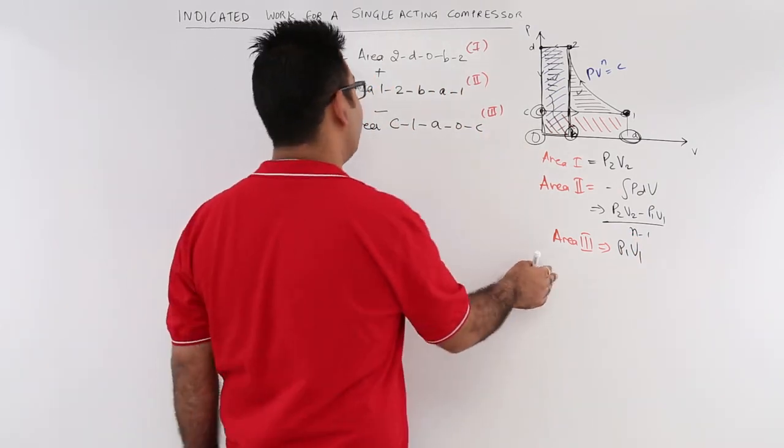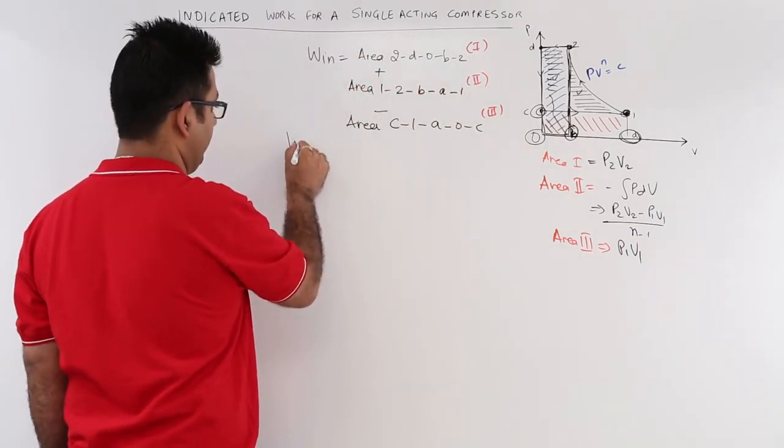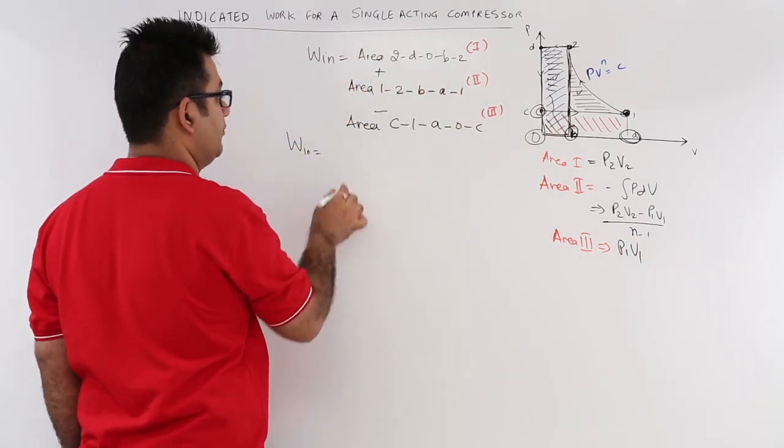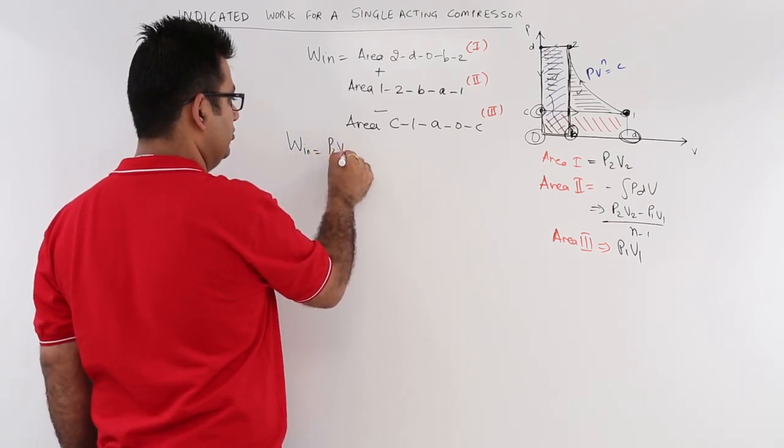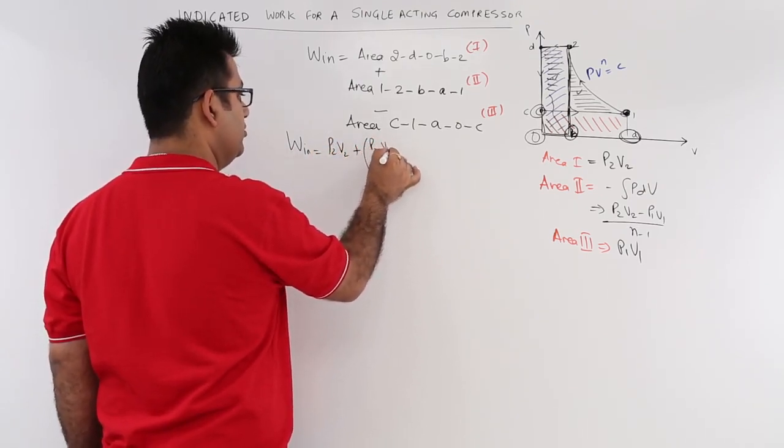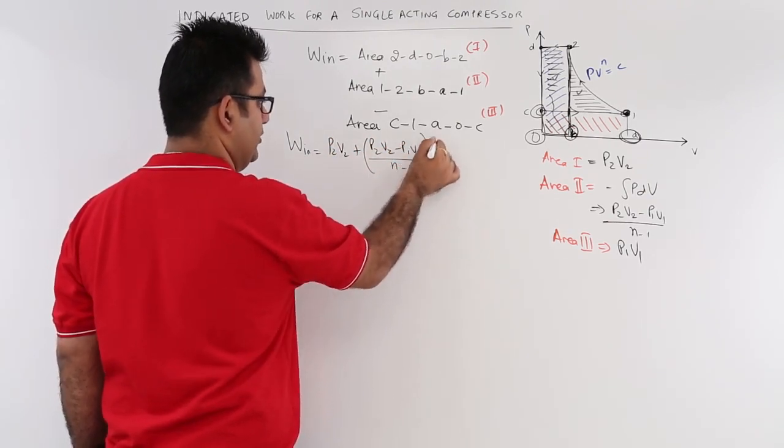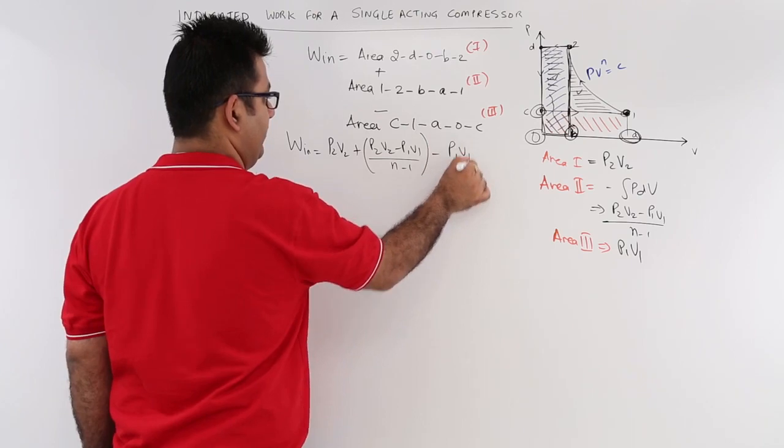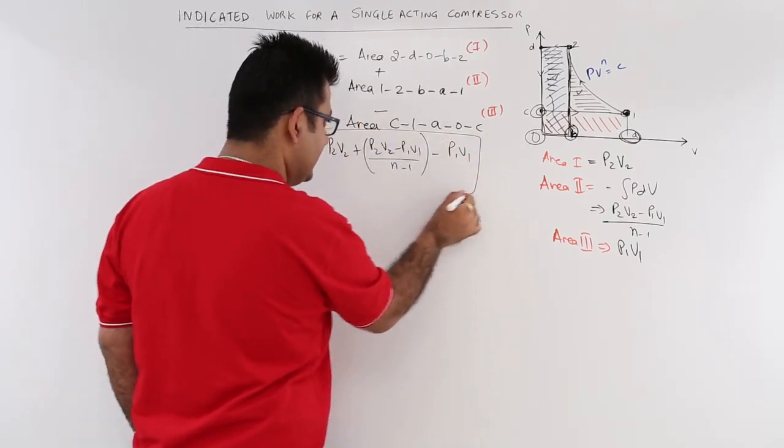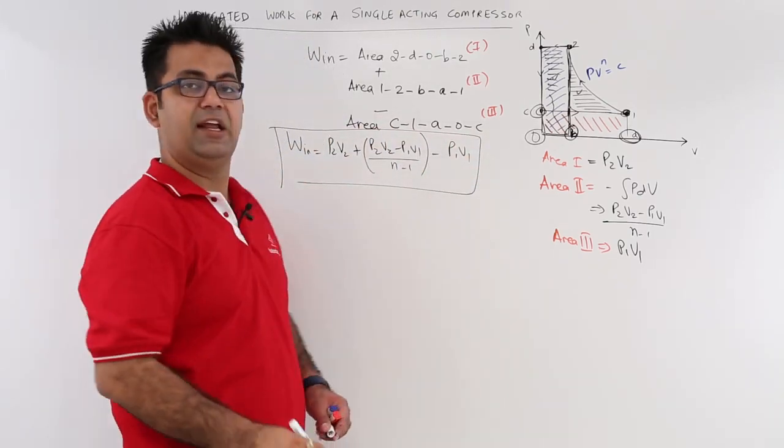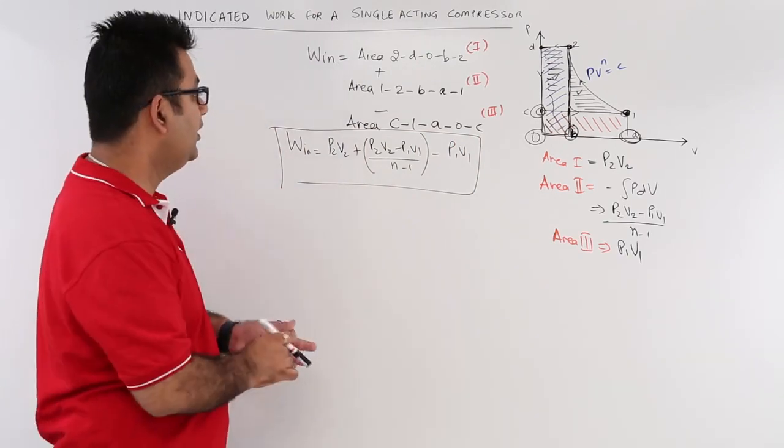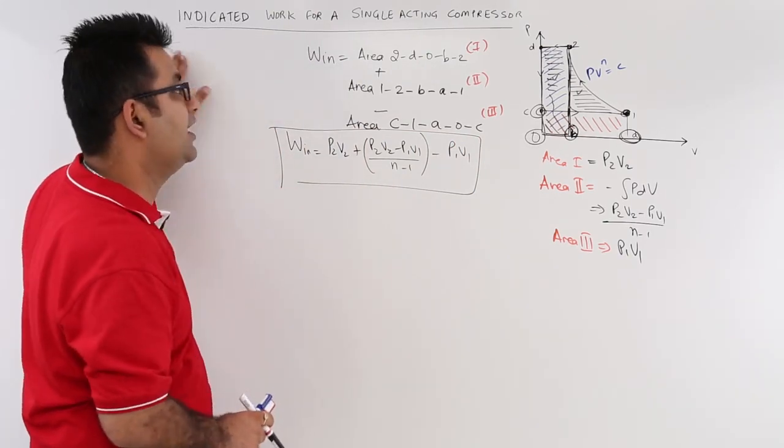So when you put in these values over here, this becomes P2V2 plus P2V2 minus P1V1 upon N minus 1 minus P1V1. So this is the mathematical expression to find out the indicated work for a single acting compressor.